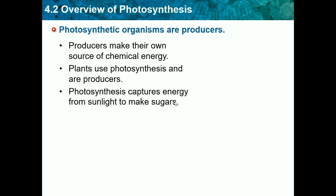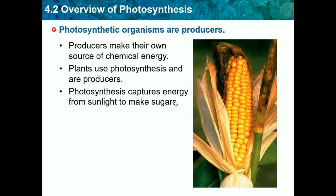Photosynthesis captures energy from sunlight to make sugars. In a basic definition, photosynthesis is taking energy from the sun to make sugar or glucose, which is the plant's food. Usually the fruit or vegetable on the plant is their extra stored food — as in the case of this corn.